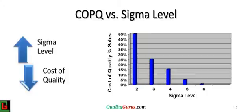The slide shows, as the sigma level of the process increases, the cost of quality decreases.